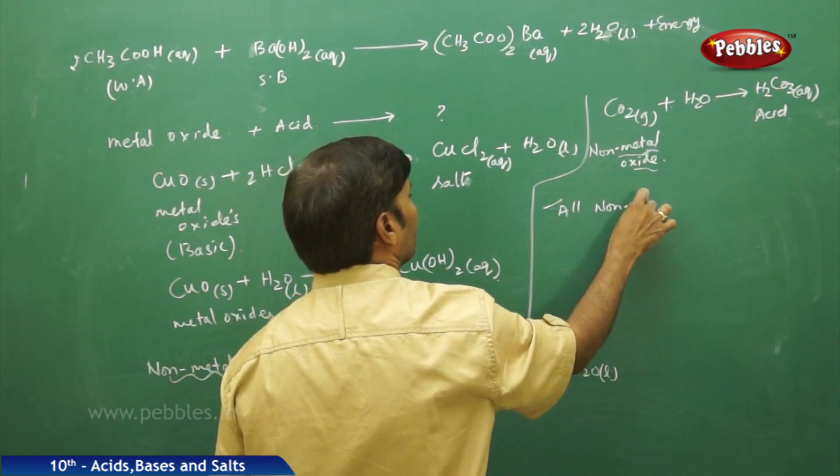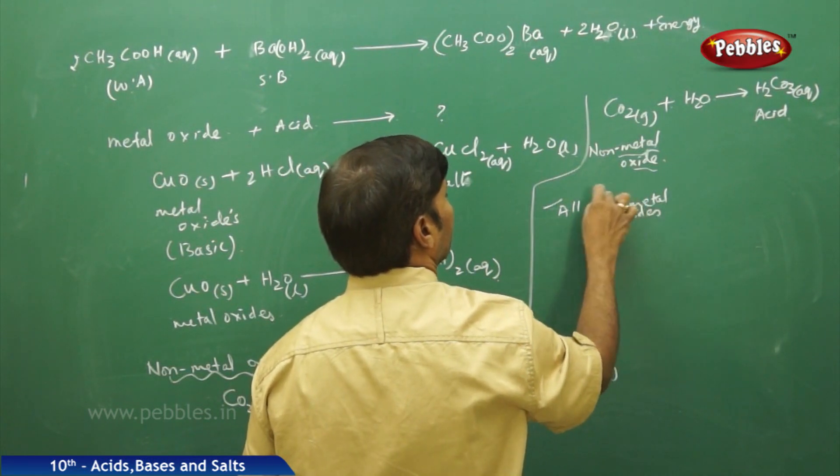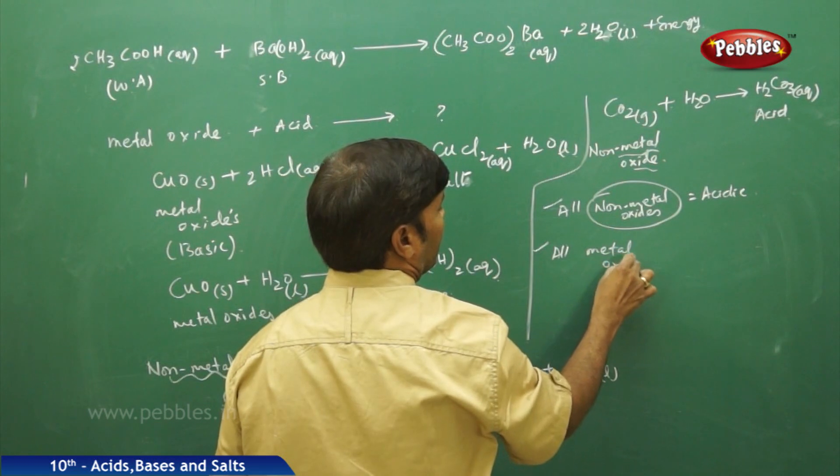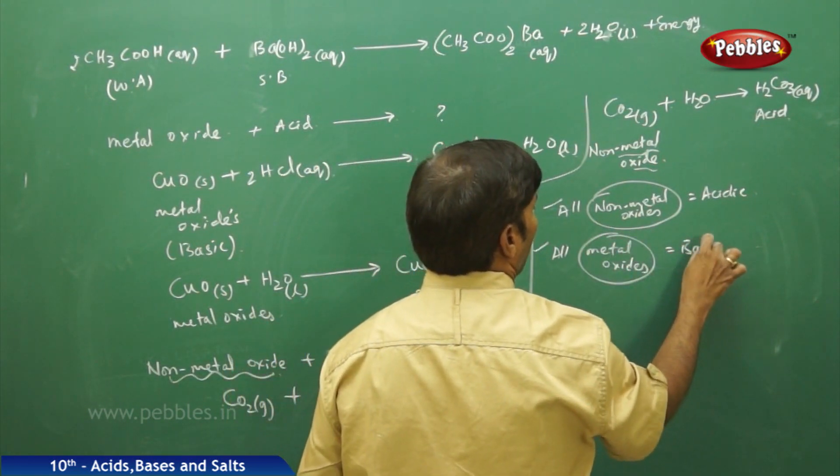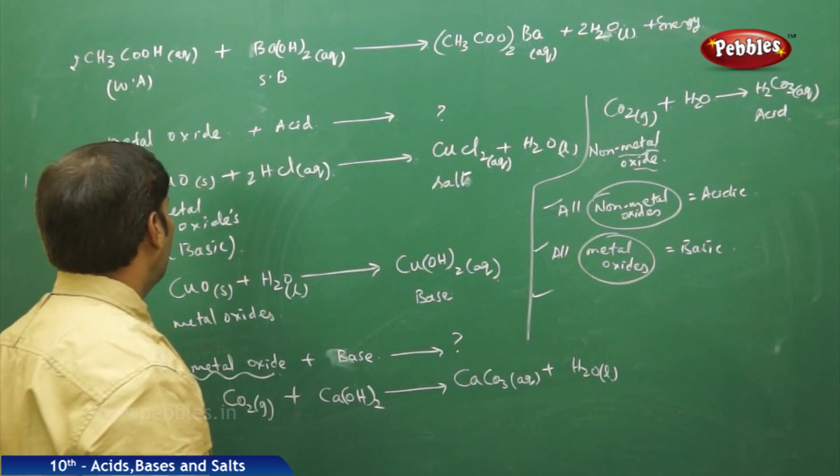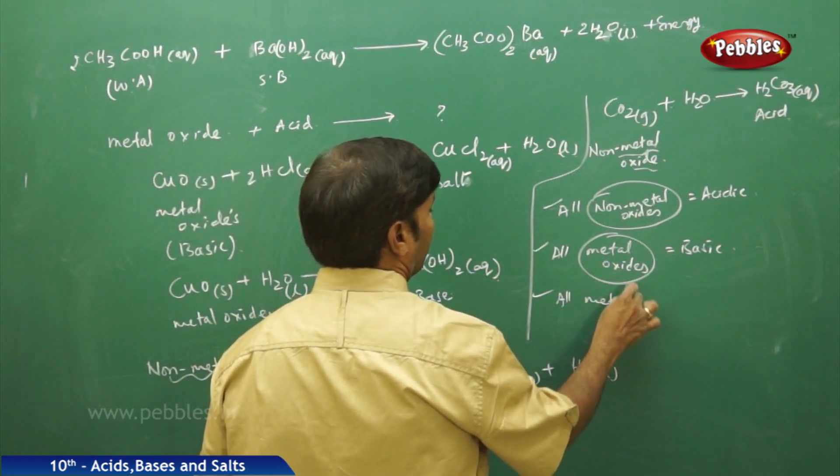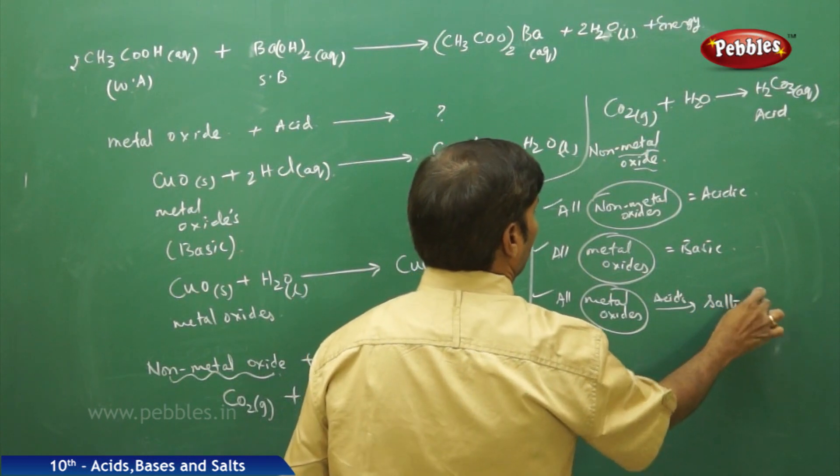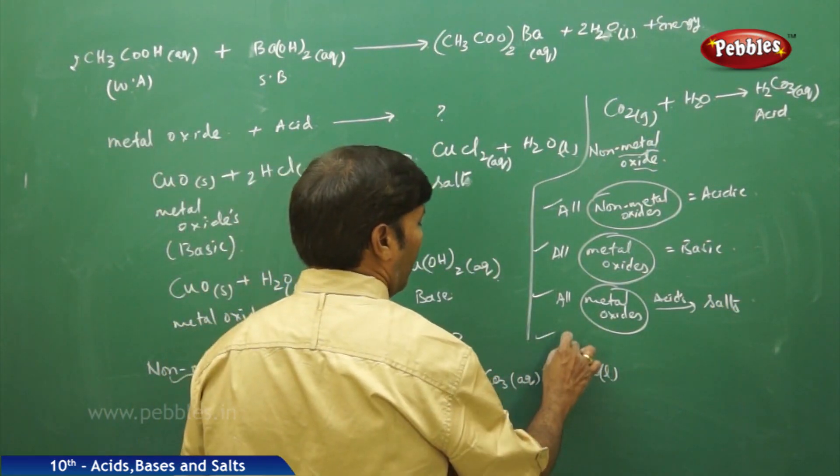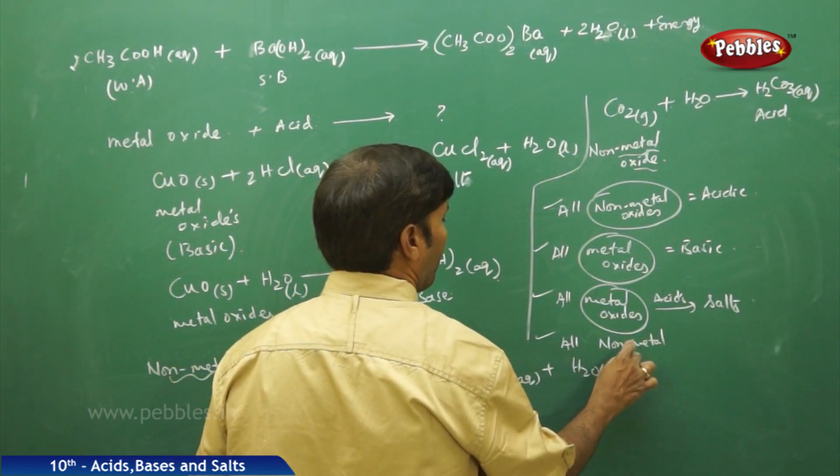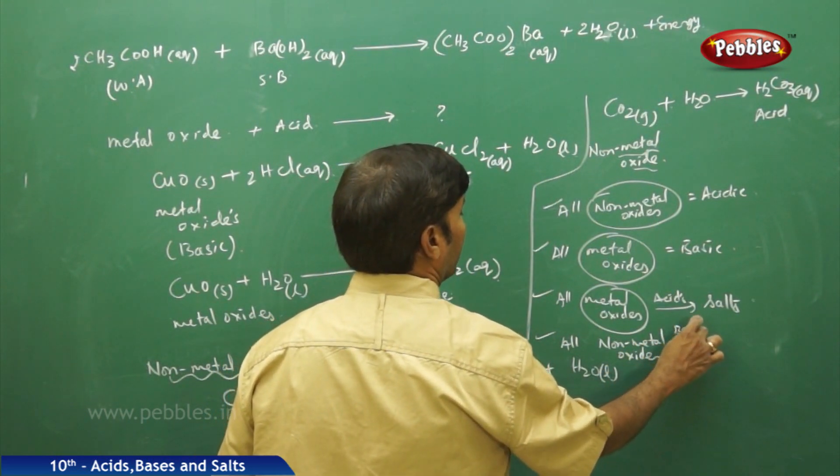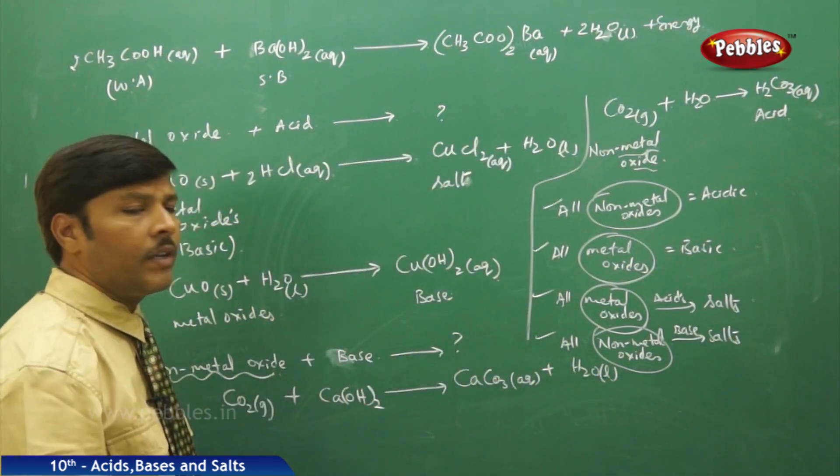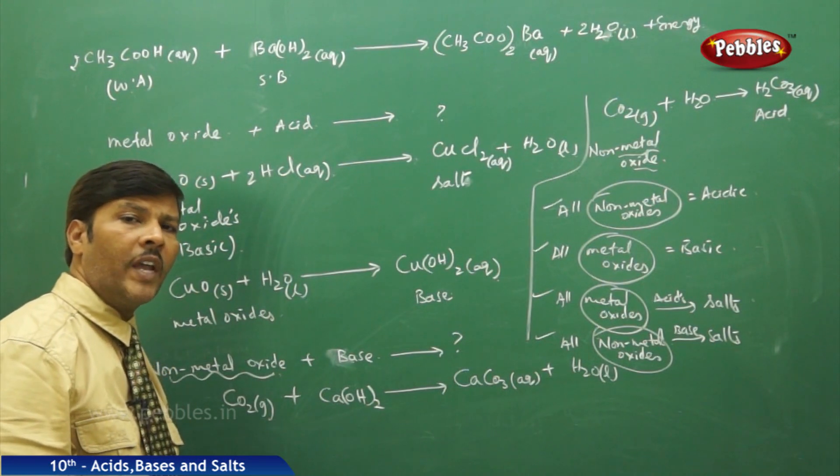So all non-metal oxides, they are acidic in nature, and all metal oxides when they react with acids, they give salts. Similarly, all non-metal oxides also, if they react with bases, likewise they also give salts. These four generalizations are very, very important for you to understand the concepts of acids and bases.